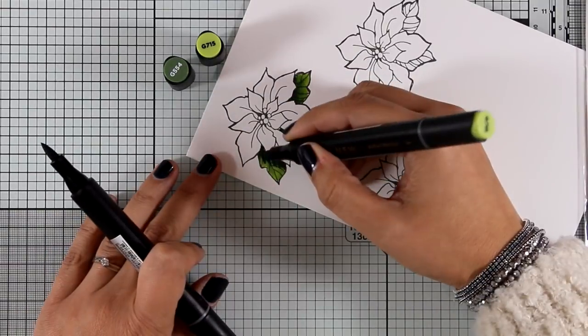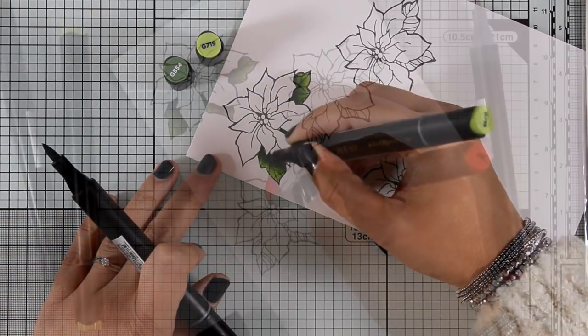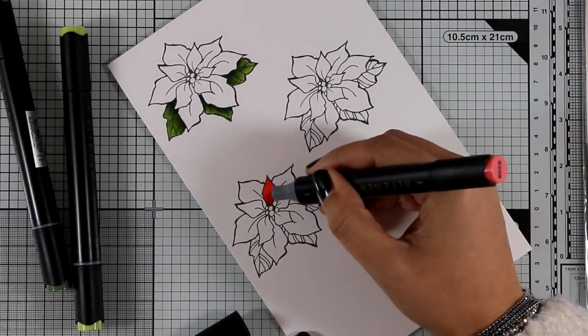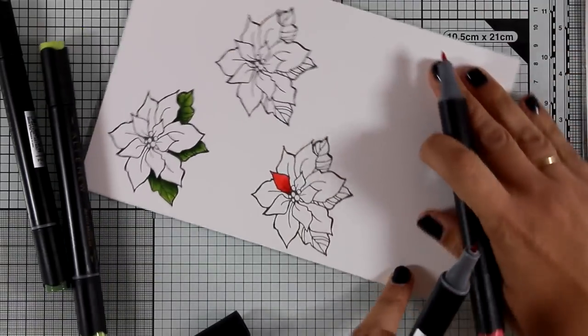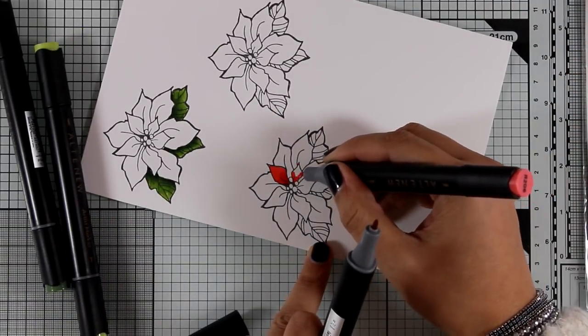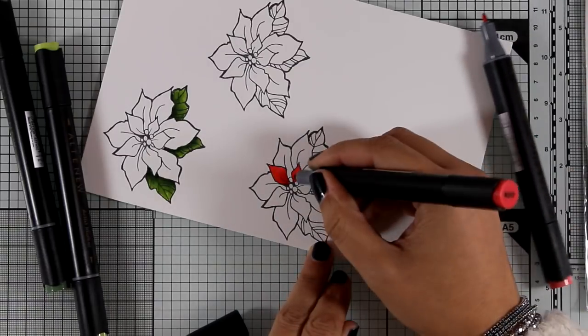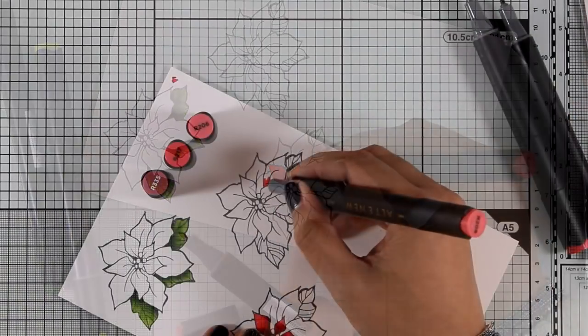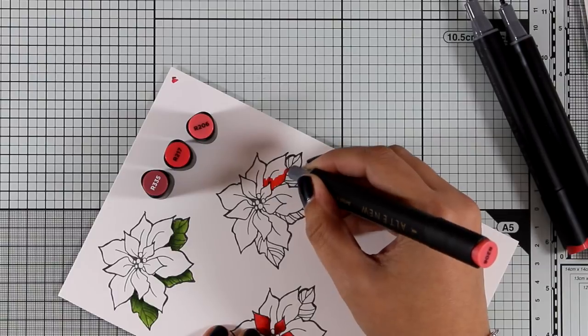These are actually from Set A. In this stamped image I'm only going to color the top layer of the flower and for that I'm using shades of red.